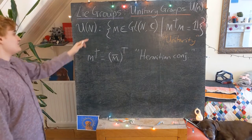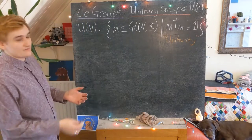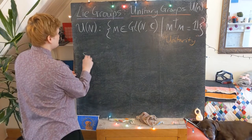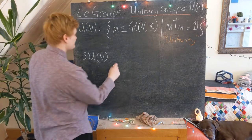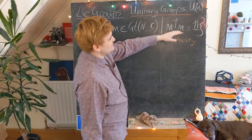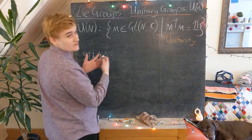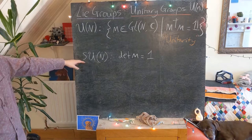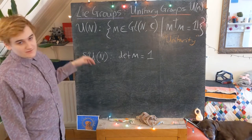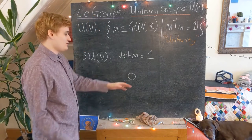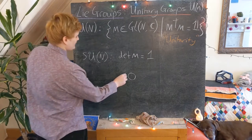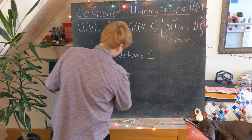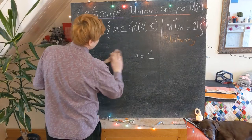This is our general definition, valid for all dimensions N. We could also consider the special refinement SU(N), defined exactly as before: the matrices must satisfy unitarity, but they also must satisfy the property that the determinant of the matrix equals plus one. This is the special refinement, paralleling how special orthogonal groups satisfy both orthogonality and unit determinant.